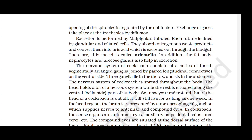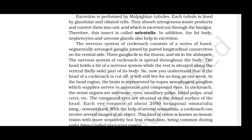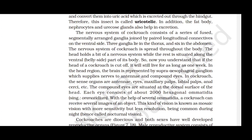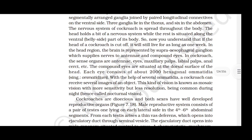The nervous system of cockroach consists of a series of fused segmentally arranged ganglia joined by paired longitudinal connectives on the ventral side. Three ganglia lie in the thorax and six in the abdomen. The nervous system is spread throughout the body, so if the head of a cockroach is cut off, it will still live for as long as one week. The brain is represented by the supraesophageal ganglion, which supplies nerves to antennae and compound eyes. The sense organs are antennae, eyes, maxillary palps, labial palps and anal cerci.